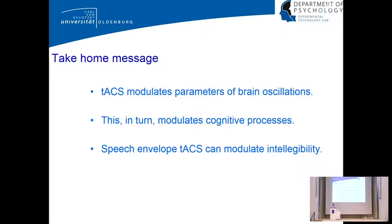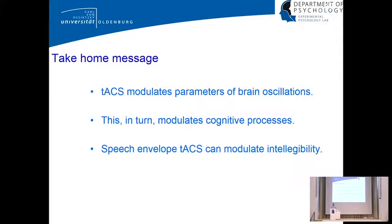The take-home message: TACS can modulate parameters of brain oscillations — mainly amplitude, but also frequency and phase, and phase relations between multiple oscillators. This modulation of oscillators leads to modulations of cognitive processes and demonstrates causal roles. Most interestingly for this audience: using speech envelopes to entrain the brain modulates speech intelligibility. I'm happy to help if more groups try this approach — during this conference I learned four other groups are already pursuing very similar approaches.